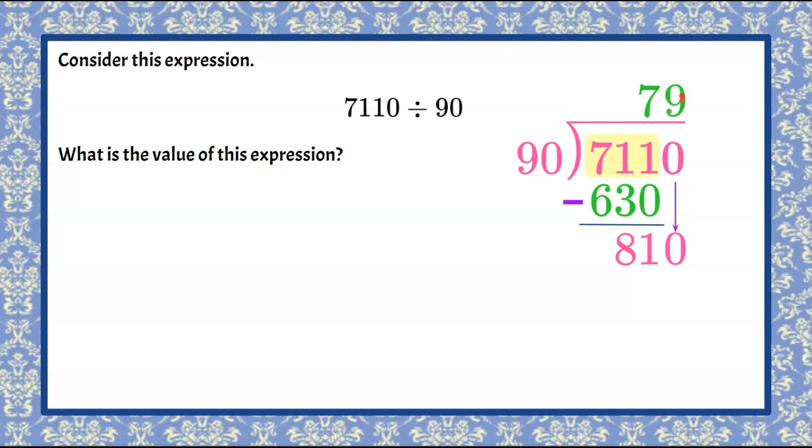So we're going to put in nine. Nine times 90 is 810. We're going to subtract 810 from 810, which is zero.